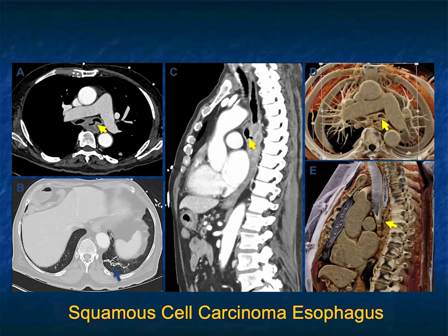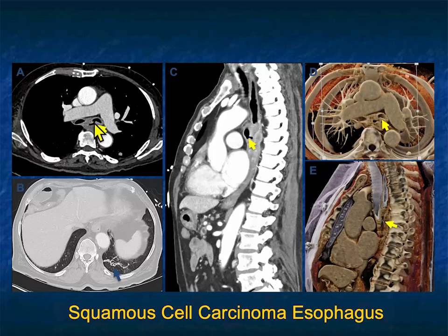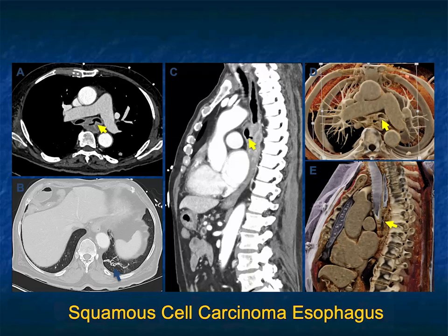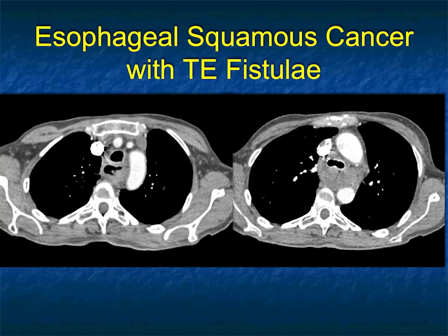Severe esophagitis and cancer can look very similar on CT. Here's a nice example at the level of the pulmonary artery: there's a large mass in the esophagus involving the left main stem bronchus, seen on both axial and cinematic rendering images. This is a squamous cell carcinoma that fistulized to the patient's left main stem bronchus.